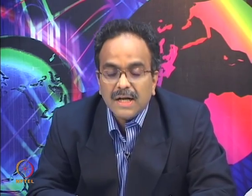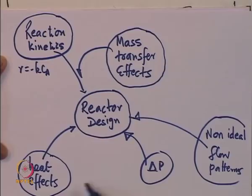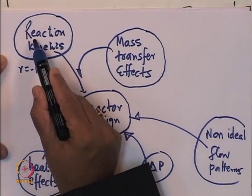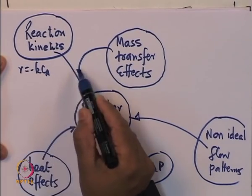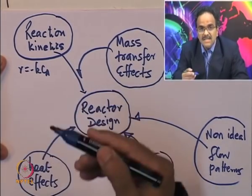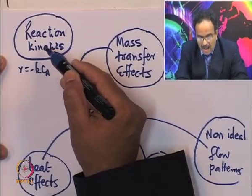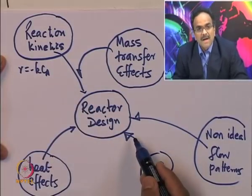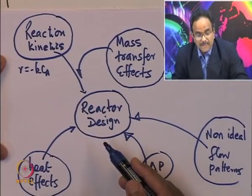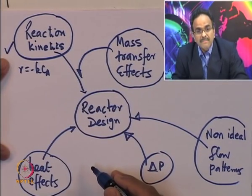If you see reaction engineering, it is all about reactor design, and around it you have so many effects. What you have learned in reaction engineering one is the reaction kinetics for simple reactions — for homogeneous reactions, R = −K·C_A, or C_A·C_B, or C_A^n·C_B^m and so on. This is what reaction kinetics is all about and how to design an ideal reactor based on the given reaction kinetics. You may have multiple reactions and heat effects, which is what you have learned to some extent in part one.